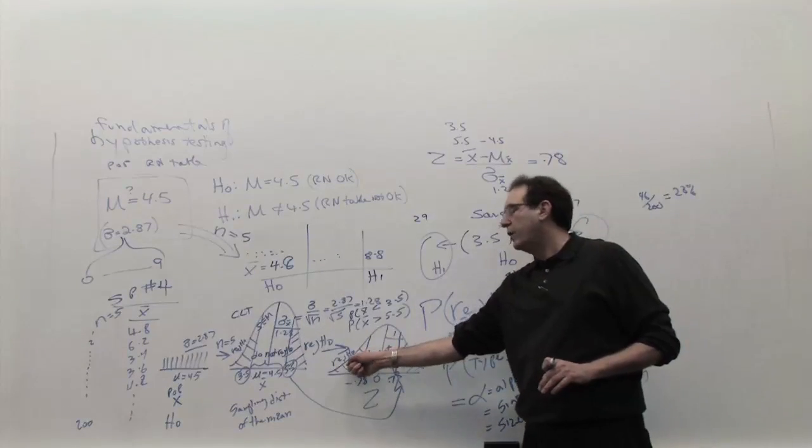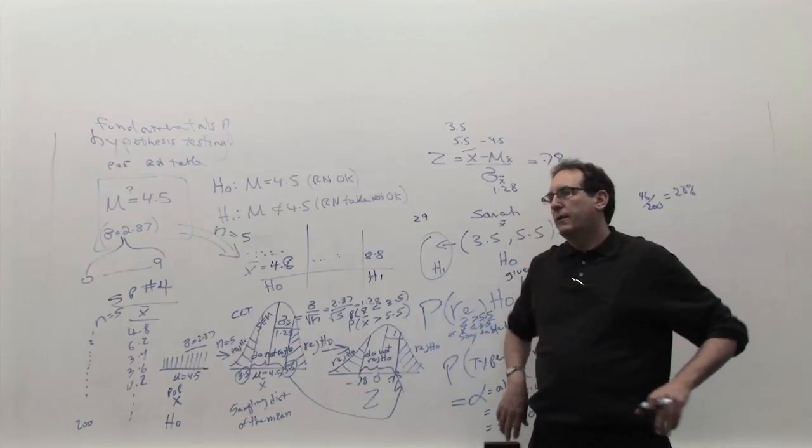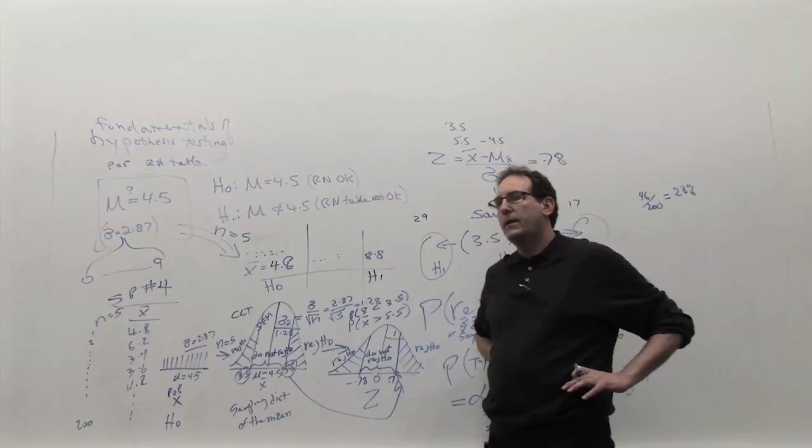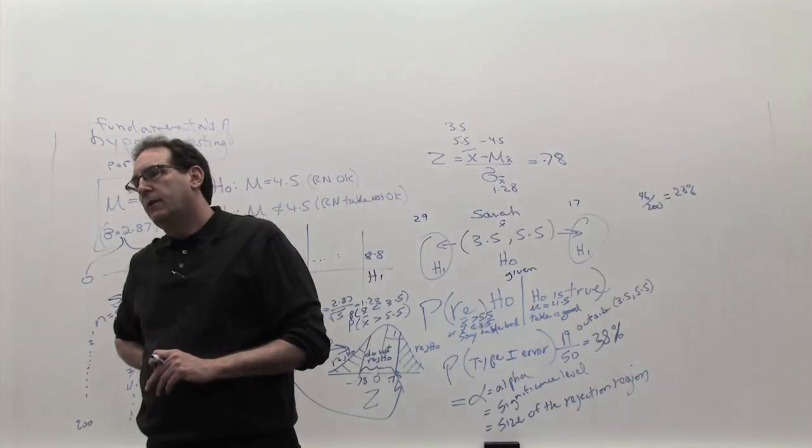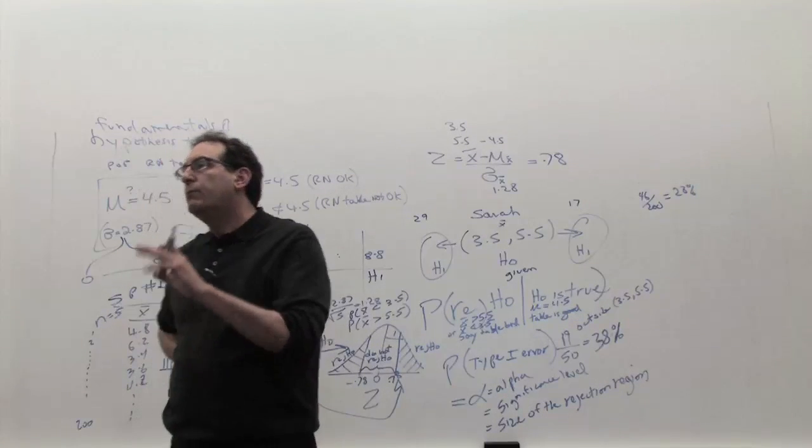You've got to be, again, it's got to be a pretty big chunk, like 20, 30%. Yes, Michael? It's 0.2177. So 0.22.